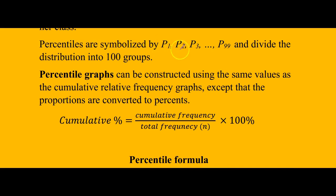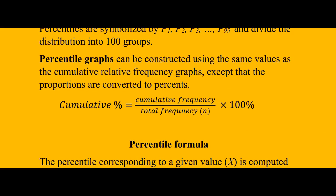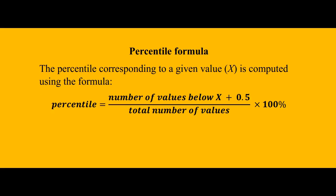Percentiles are symbolized by P1, P2, P3. They divide the distribution into 100 equal groups and we can make percentile graphs by using cumulative frequency. Here, instead of using decimals, we use percent, which is why we multiply it by 100. But we're just going to learn how to convert any given raw data to percentile. Use this formula: find how many numbers are below the given value, add 0.5 to it, divide by the total number of values, and then multiply by 100 to convert it to percent.